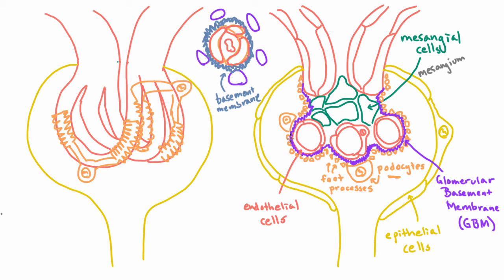And so this basement membrane here, the glomerular basement membrane, is also maintained by these endothelial cells that would also have a basement membrane around them.